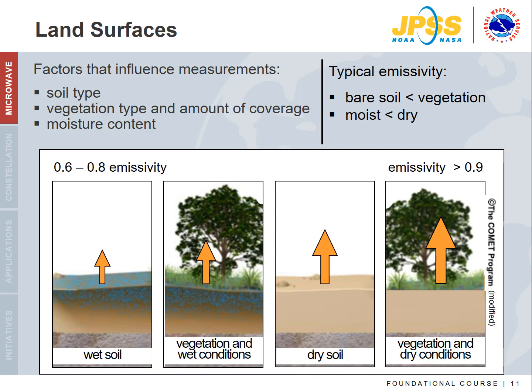Emissivity is generally high for most land surfaces but depends on soil type, the type and amount of vegetation, and moisture content. Dry soil will appear with relatively warmer brightness temperatures, while saturated soil will appear relatively colder. The emissivity of vegetation including grasslands and forests is higher than over bare soil. Vegetation emits its own microwave radiation and increases emissivity for an otherwise wet surface below. By comparing several frequencies and both vertical and horizontal polarizations, the effects of vegetation can be distinguished from the effects of surface wetness.